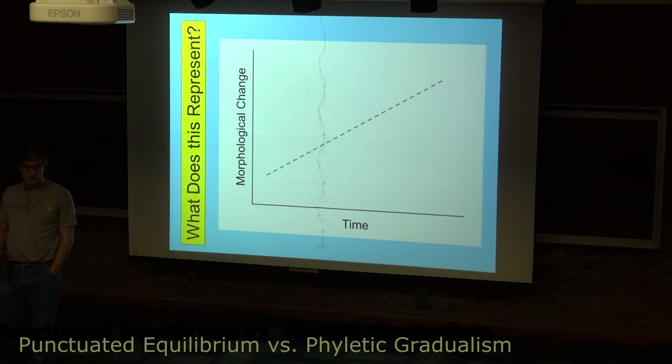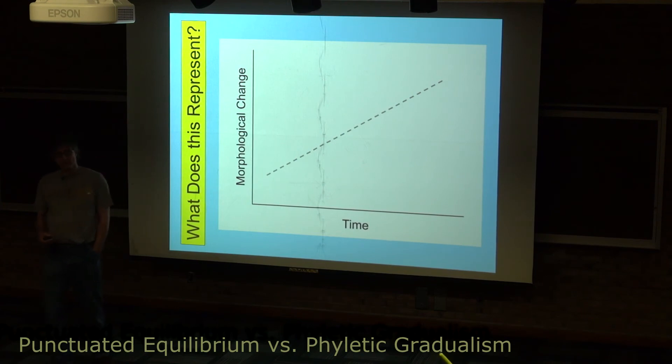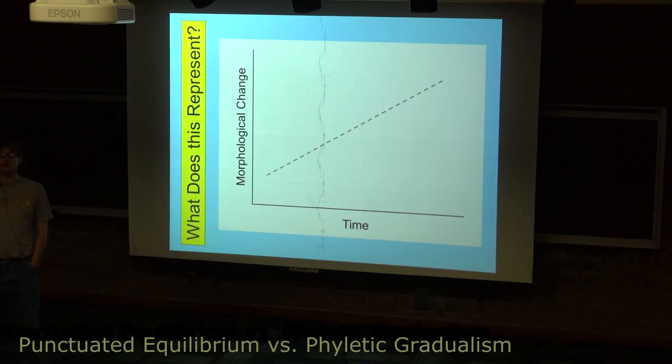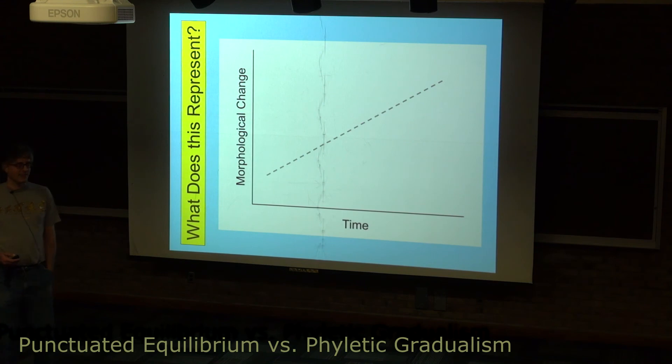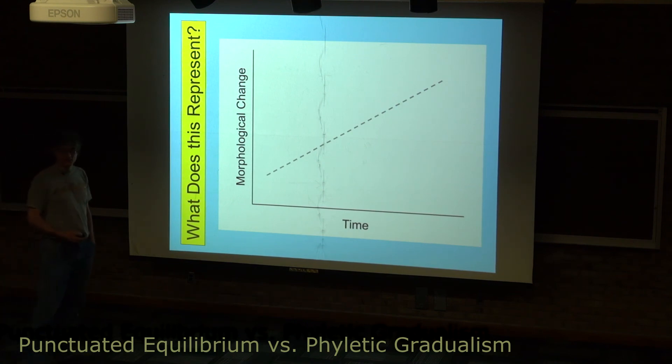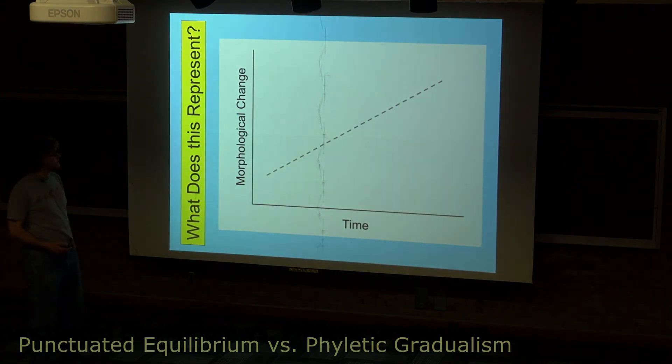Also populations tend to display abrupt changes through time. So neither phyletic gradualism nor punctuated equilibrium are exactly the way things happen all the time. They represent two extremes in how you can think about macroevolutionary change - either slowly and constantly, or in short bursts followed by relative stasis or no change.